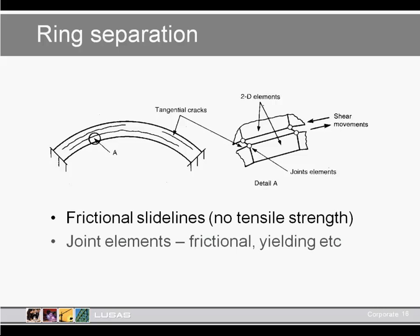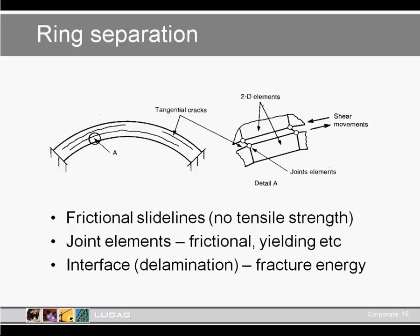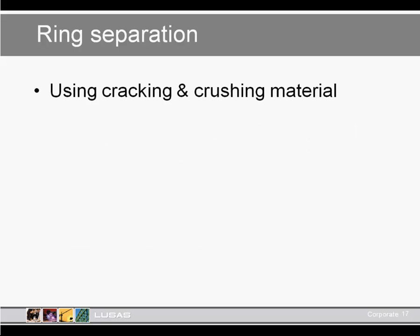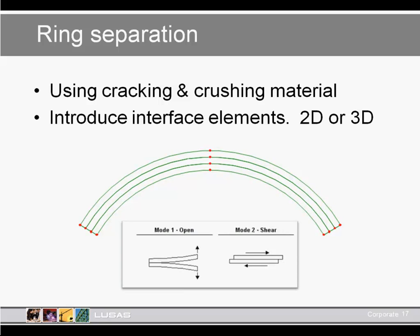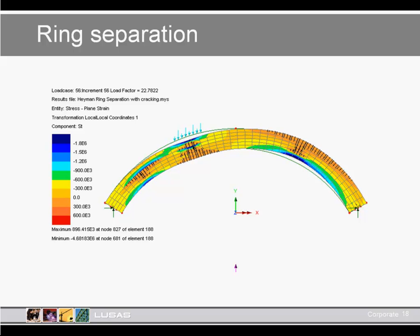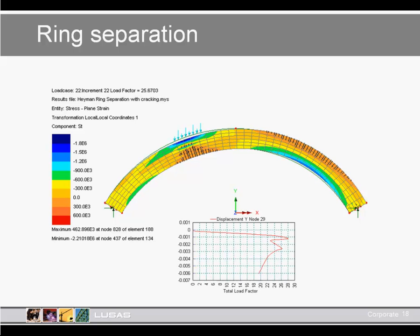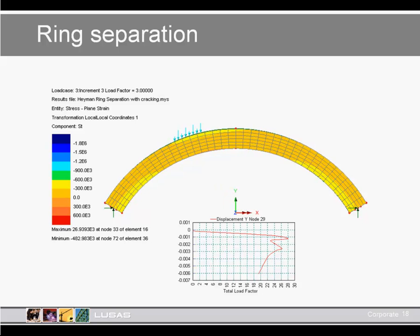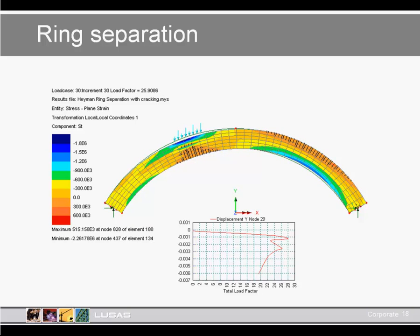Ring separation is another step forward from a basic arch structure. Here you introduce either a joint or delamination planes to represent the planes of failure, assigning tensile strength or shear failure strength to understand collapse. Taking the same example as before — which had a peak load of about 38.5 tonnes — and introducing interface elements to represent the rings, the concrete cracks again and the mechanism develops. This time the peak load has reduced to about 28 tonnes compared to 38 tonnes without ring separation.